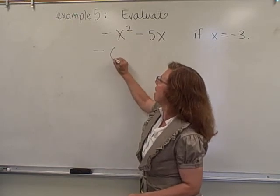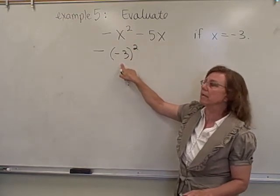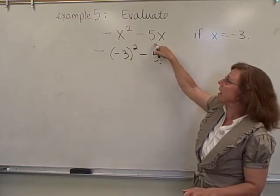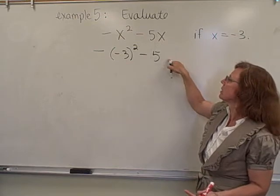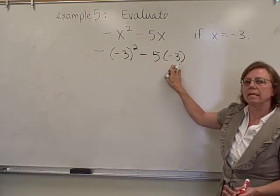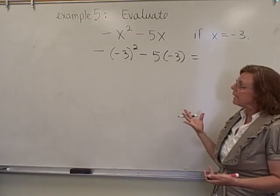when you substitute it in. So it has to be the opposite of negative 3 is getting squared because x is negative 3, and then we're going to subtract 5 times x. 5x means 5 times x. So again, we need to use some parentheses there to show that we're multiplying the 5 with the negative 3. So that's just substituting it in.